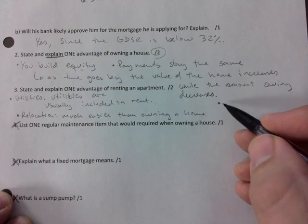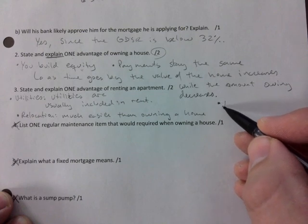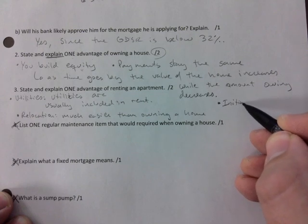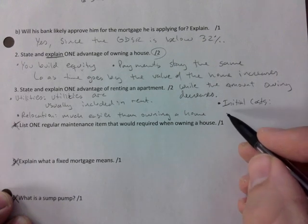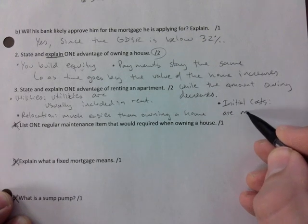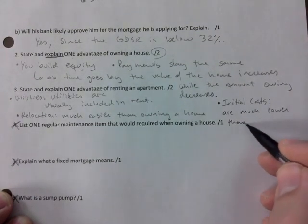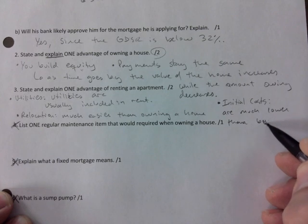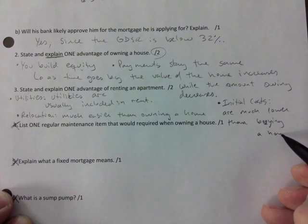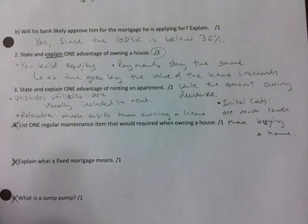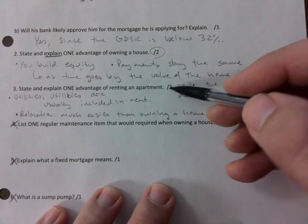You can also say initial costs are much lower than buying a home. So just explain. If you only put down a word or two, give yourselves one mark. If you did some explanation, you get another mark for that. So we are at two, four, five and three, that's eight. So this page is worth eight.